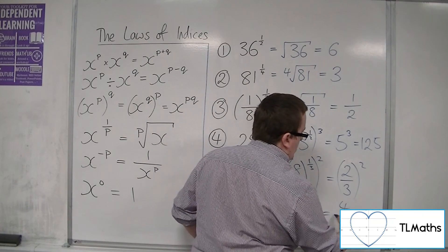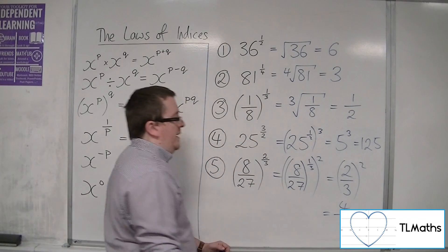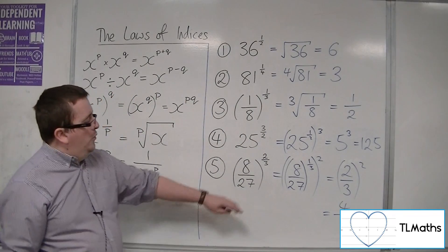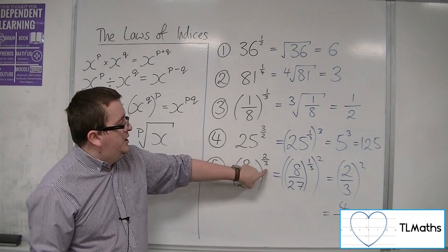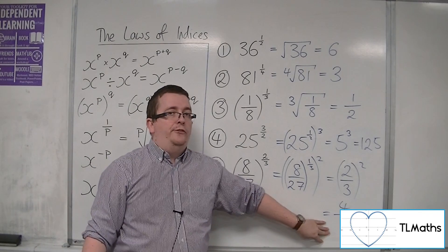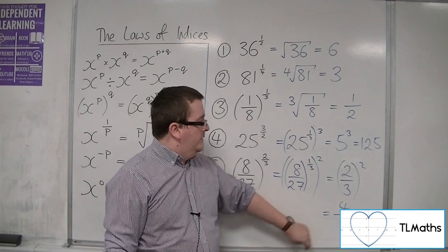I've still got that 2 on the outside. So I square the numerator, and I square the denominator. So 8 over 27 to the 2 thirds is actually just 4 ninths.